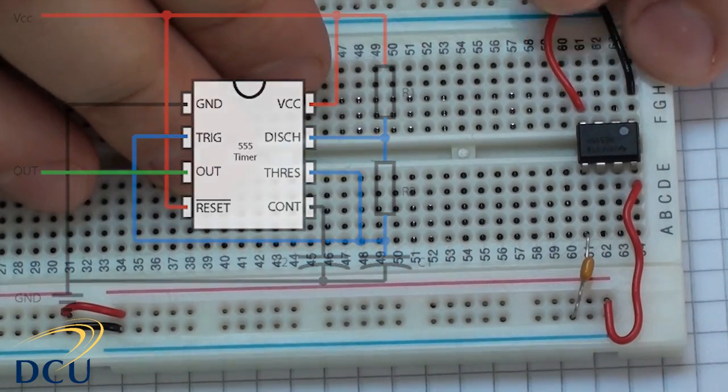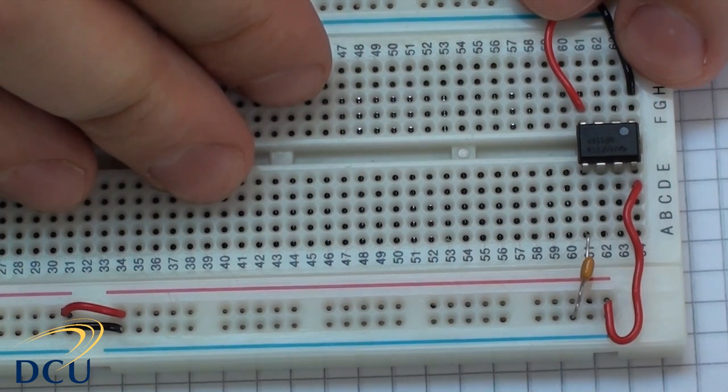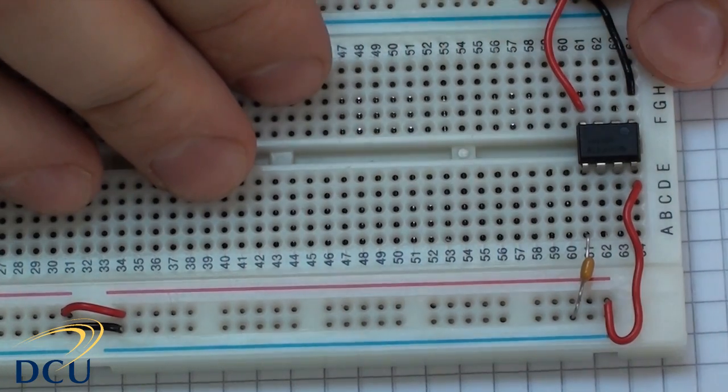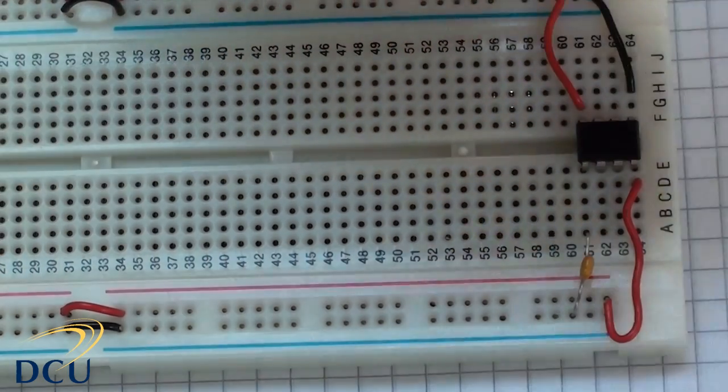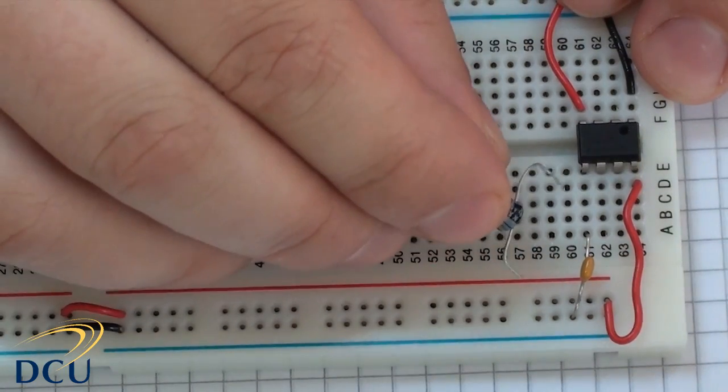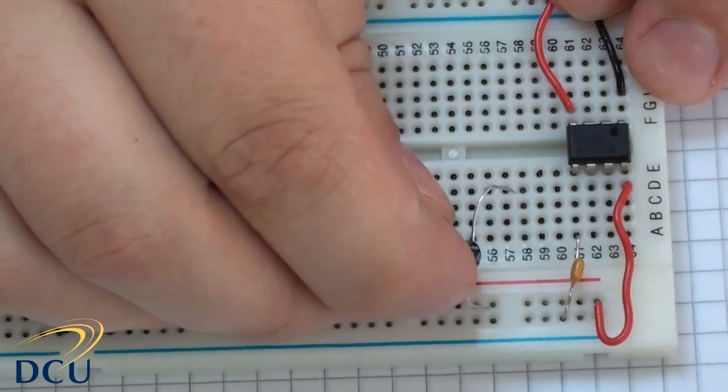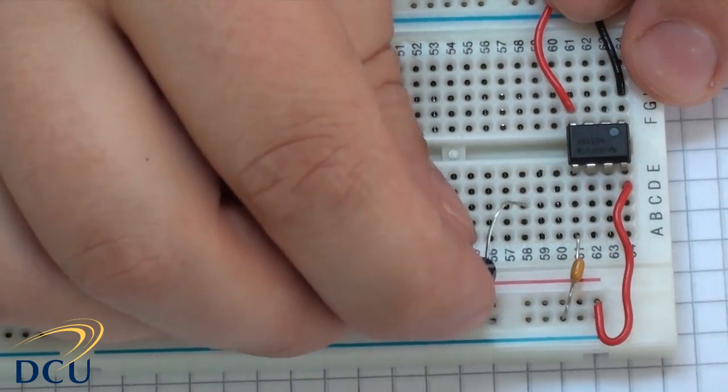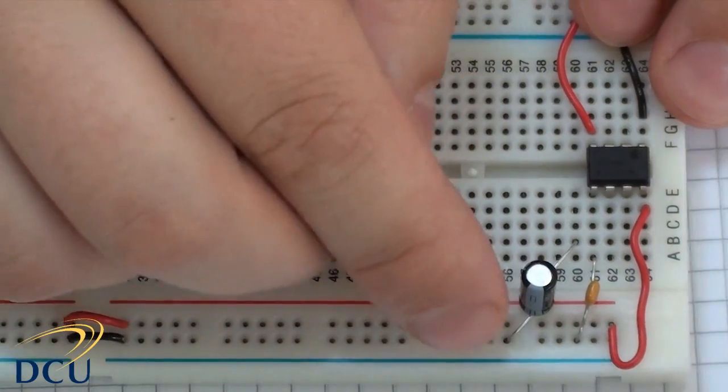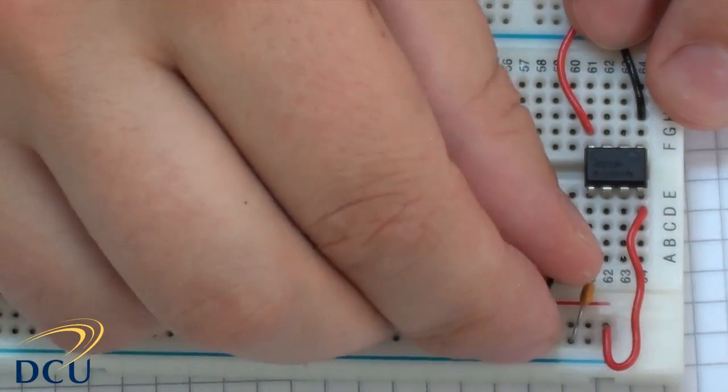Then we need to look at the next pin. Our trigger and our threshold are connected to capacitor C1, which is connected to ground. So C1 is connected to ground. What I'll do is I'll set this up on line 60 here so it's not touching one of the pins because we're going to be able to pull two wires from it. So connect that to pin 60. So that's connected to ground to pin 60. Again, be very careful that the minus side is connected to ground.